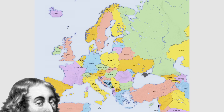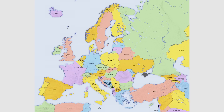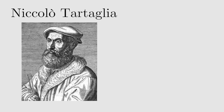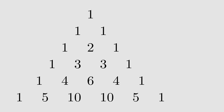Even in Europe Pascal was scooped. For example, the triangle appeared in the writings of the mathematician Tartaglia, so it is called Tartaglia's triangle in Italy today. Let's start with three facts that you may have seen.